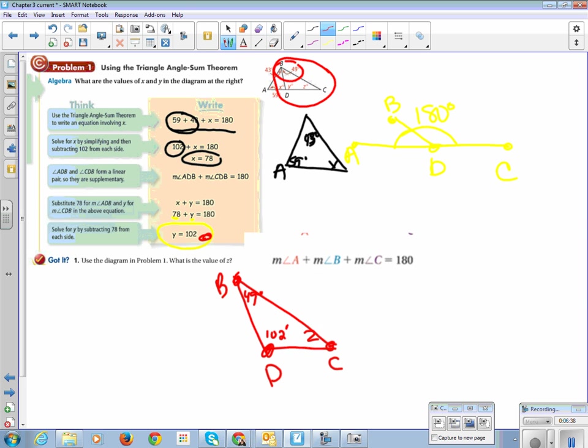All right, so we're going to use this triangle sum theorem to put together a little equation. We got 49, and 102, and Z, adds together to be 180. We're going to add 49 and 102 to get 151. It's equal to 180.